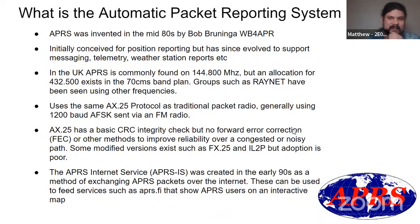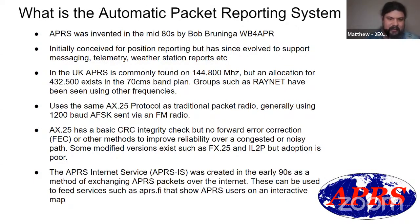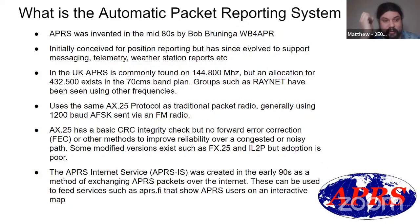So, what is the Automatic Packet Reporting System — APRS? It was invented in the mid-80s by a chap called Bob Bruninger, WB4APR. He had been doing some work for the US Navy on a similar system and decided it would be awesome to carry that over to amateur radio. It was initially conceived for position reporting, but has since evolved to support messaging, telemetry, and weather station reports. In the UK you can commonly find it on 144.800 MHz. There's also an allocation on 70cm at 432.500 MHz, though you'll rarely hear anything there. Groups like Raynet have been seen using their own frequencies — 144.800 is just where the majority of traffic is.